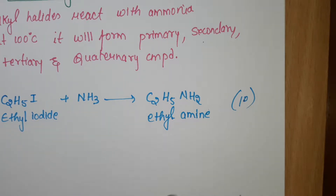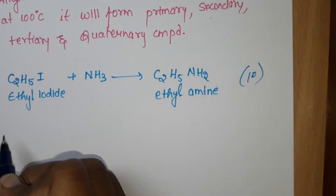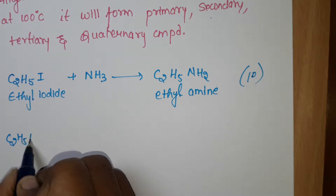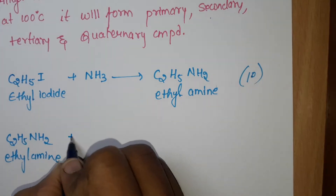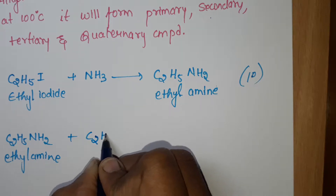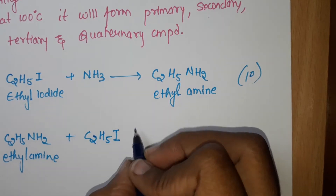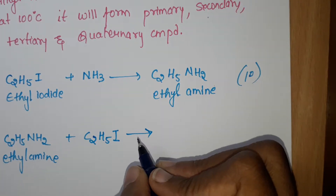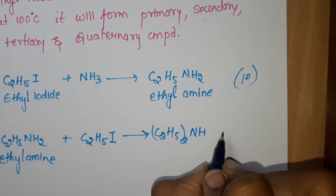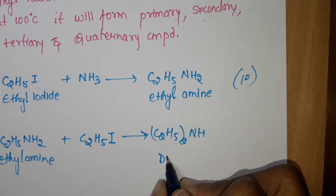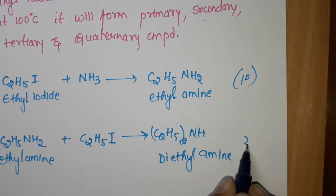Now we'll see how it can give secondary amine. This ethyl amine (C2H5NH2) reacts again with alkyl halide — C2H5I — and it will give two molecules of ethyl group with NH, which is diethylamine. This is a secondary amine.